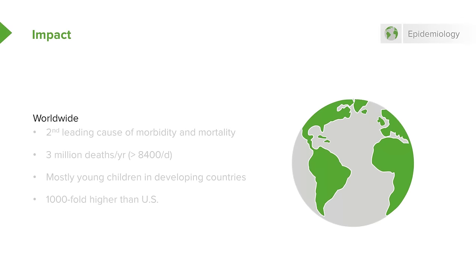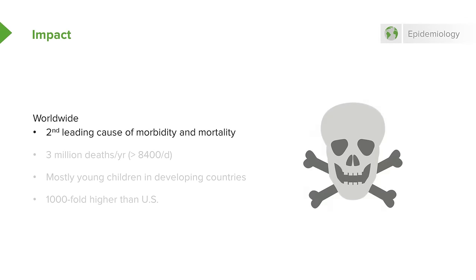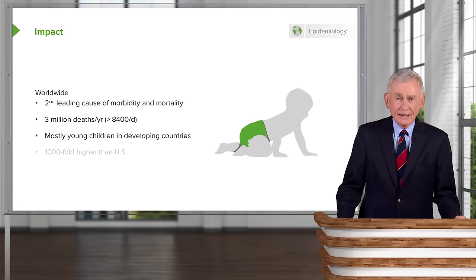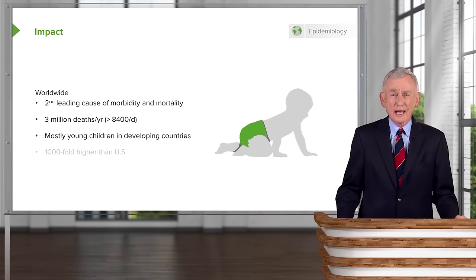It has a tremendous impact on the world. It's the second leading cause of morbidity and mortality, with 3 million deaths a year — that's more than 8,400 a day. Unfortunately, it affects young children in developing countries because they don't have a lot of fluid to start with, so if they start losing fluid, they lose blood volume and can get sick in a hurry.